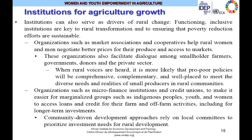Institutions can also serve as drivers of rural change. Functioning, inclusive institutions are key to rural transformation and ensuring that poverty reduction efforts are sustainable. Organizations such as market associations or cooperative associations dominated by women help rural women and men negotiate better prices for their produce and access to markets. These organizations also facilitate dialogue among smallholder farmers, governments, donors, and the private sector. When rural voices are heard under such umbrella organizations, it is more likely that pro-poor policies will be comprehensive and well-placed to meet the diverse needs of small producers.